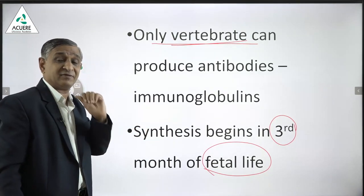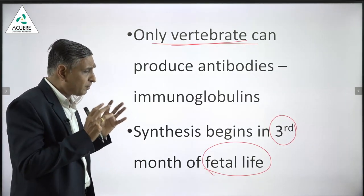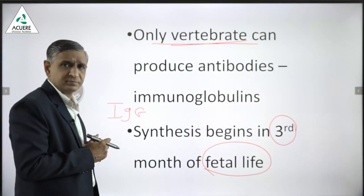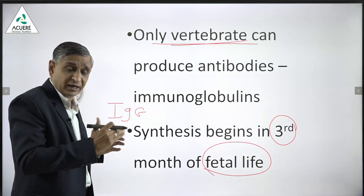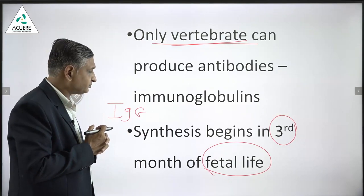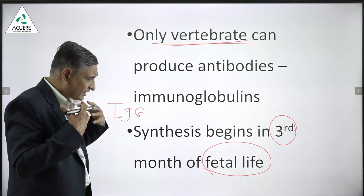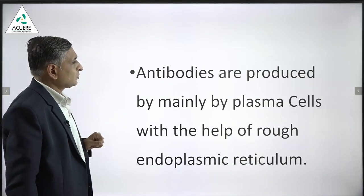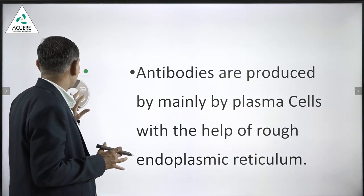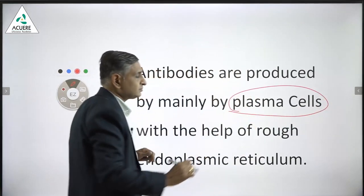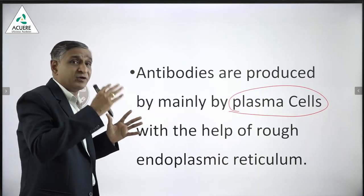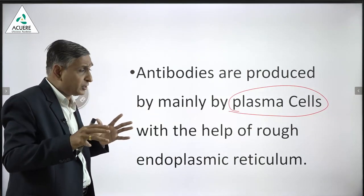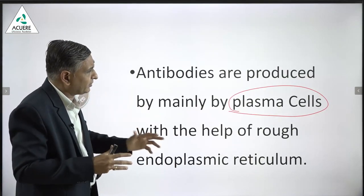This has clinical significance. If a baby at birth has IgG type antibodies present, it means the baby had an infection while in its intrauterine state. Antibodies are produced mainly by plasma cells, which are modified lymphocytes that have converted themselves into factories of antibodies.